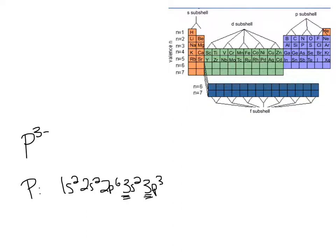3s is already filled. 3p has three electrons in it. I can add more. So instead of 3p3, P3- is 3p6.